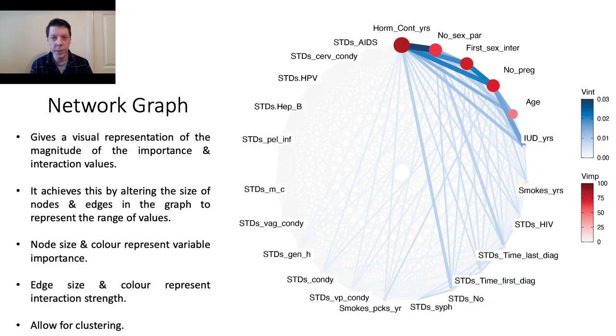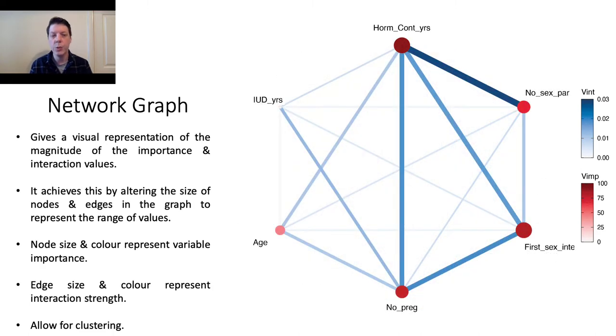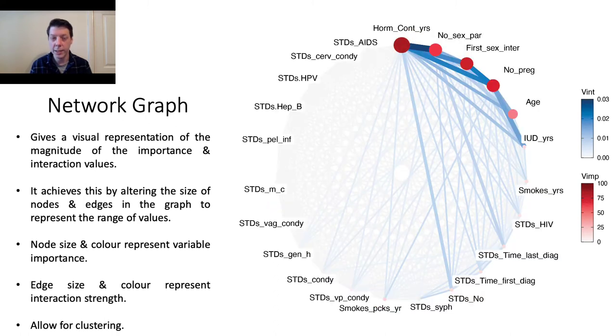Our next idea for jointly displaying importance and interactions was a network graph. Here we give a visual representation of the magnitude of importance and interaction, not only by color, but also by size. The node size and color represent the variable importance, and the edge size and color represent the interaction strength.